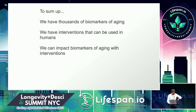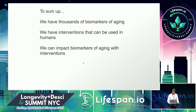To summarize: we have a lot of biomarkers of aging — enough to start clinical trials. We have interventions that can be used in humans, and we've shown that we can impact biomarkers of aging with interventions. The last critical piece missing is to show that we can also impact morbidity, disease development, and mortality. Once we show that something works, I think the clinical community will listen — and that is really the key.